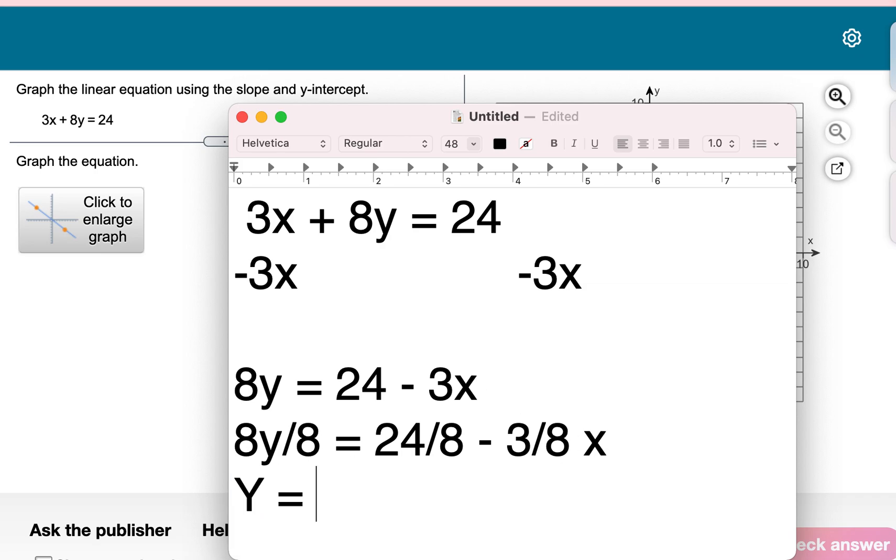So if we simplify, that got rid of the 8 like we wanted. 24 divided by 8 makes 3. And then we're just going to keep this as a fraction. I like to type them in with parentheses like that.